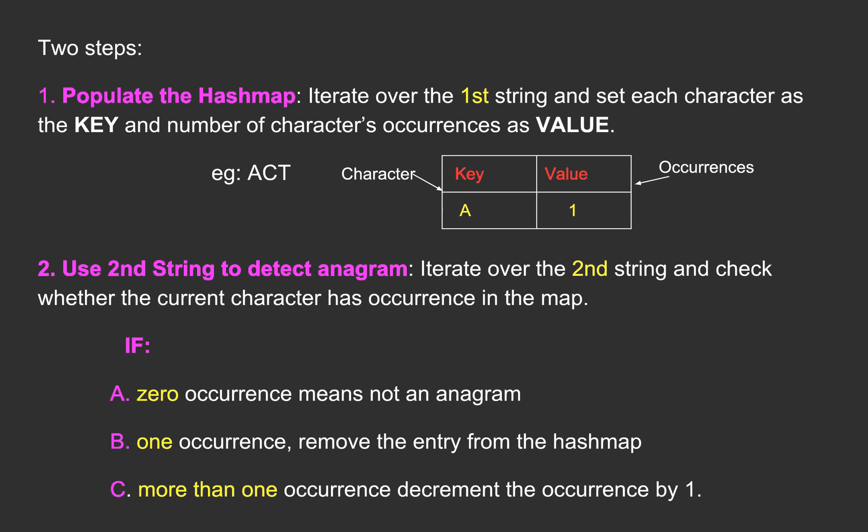We will follow two simple steps. In the first step, we will populate the hash map by iterating over the first string. In the map, the key parameter would hold the character and the value parameter would hold the number of occurrences of that character.